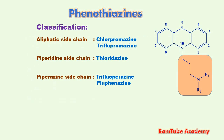Phenothiazines are classified on the basis of the side chain present in the molecule, mainly into three types. Number one: aliphatic side chain-containing molecules, like chlorpromazine and triflupromazine. Number two: piperidine side chain-containing drug molecules, like thioridazine.